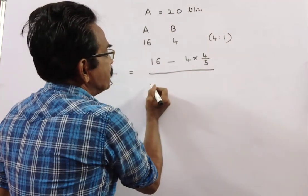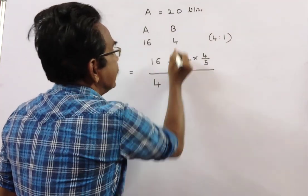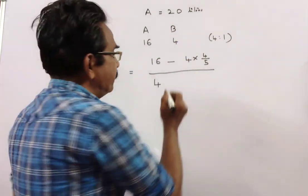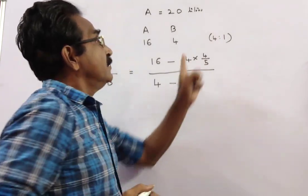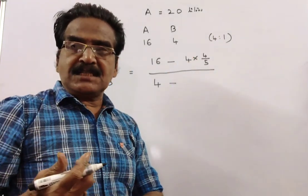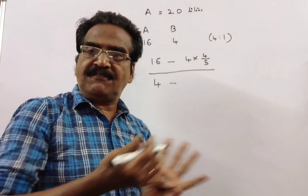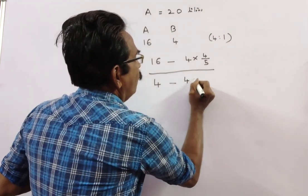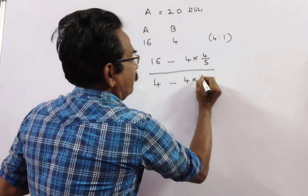Now coming to the position of B. Initially there was 4 liters, minus if 4 liters of mixture is drawn, what is the quantity of liquid B drawn? 4 into 1 by 5.